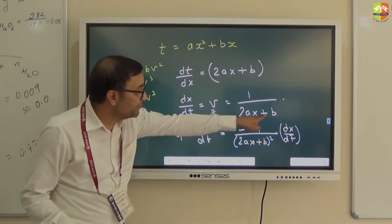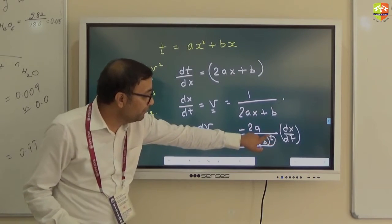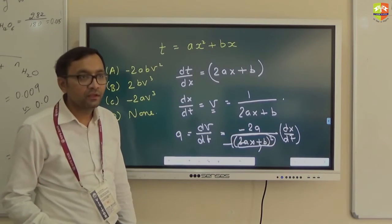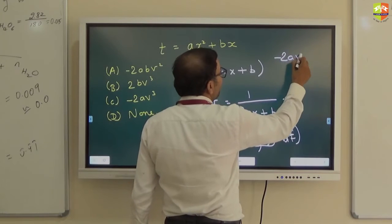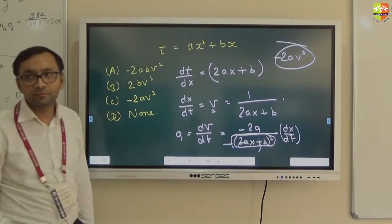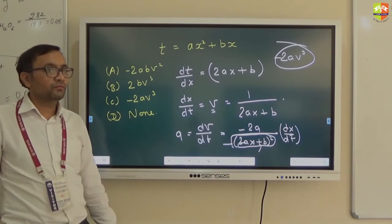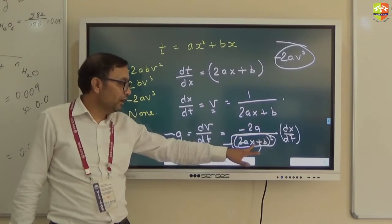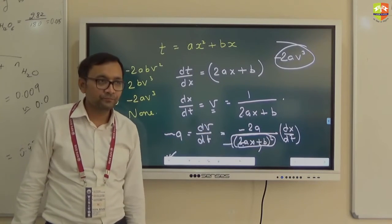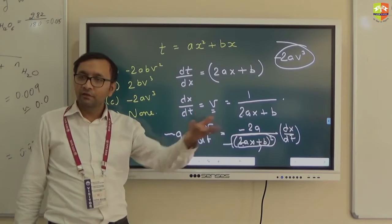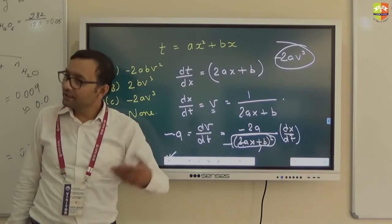And 1 divided by 2ax plus b is velocity. So this is actually velocity squared. Right? And dx by dt is also velocity. So answer is minus 2a v cubed. 1 divided by 2ax plus b whole square is velocity squared, into dx by dt which is again velocity only.